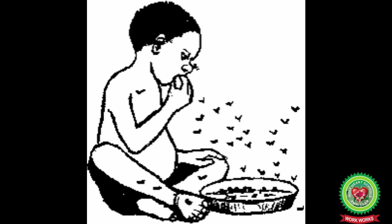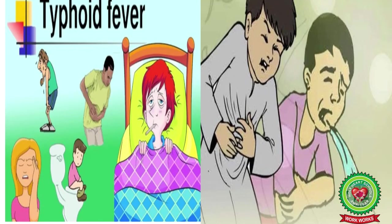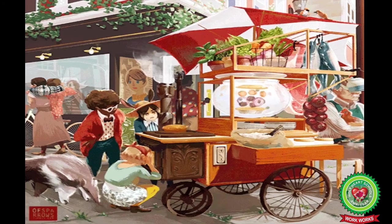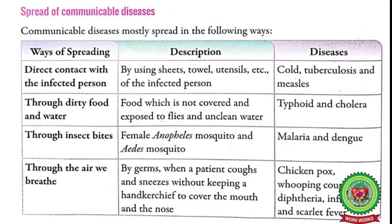Diseases like typhoid and cholera spread through dirty food and water. If a person eats food that is not covered and is exposed to flies, or drinks unclean water, he may suffer from these diseases. We should not buy any food items from hawkers because that food is uncovered and exposed to flies.